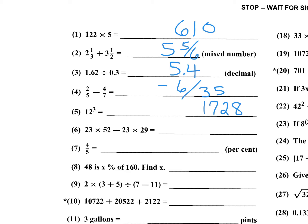If you haven't memorized 12 cubed, you'd have to do 144 times 12 the long way. Number 6: 23 times 52 minus 23 times 29. I can factor out a 23, leaving 52 minus 29.